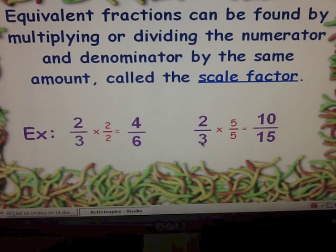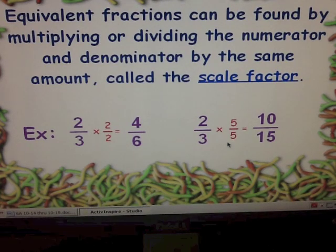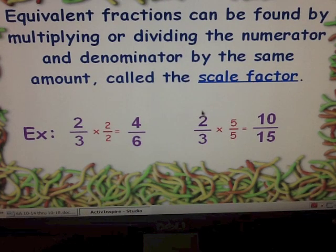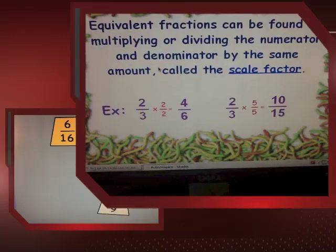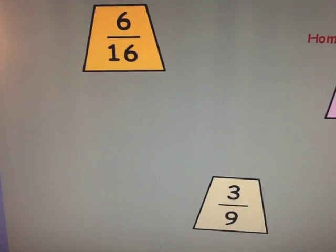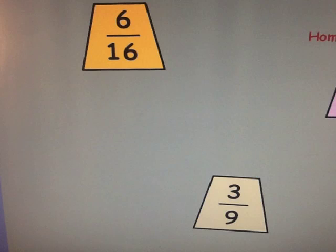So I could multiply two-thirds by a hundred over a hundred and get two-hundred over three-hundred — that would be an equivalent fraction. I could even multiply it by a scale factor of five million; as long as I multiply both numerator and denominator by five million, I will get an equivalent fraction. Let's do a couple of practice problems — for each example, let's find two equivalent fractions.